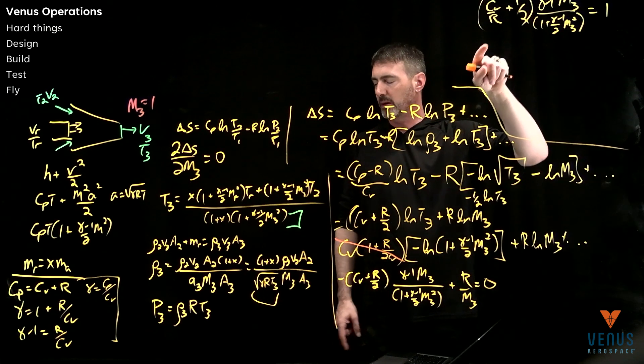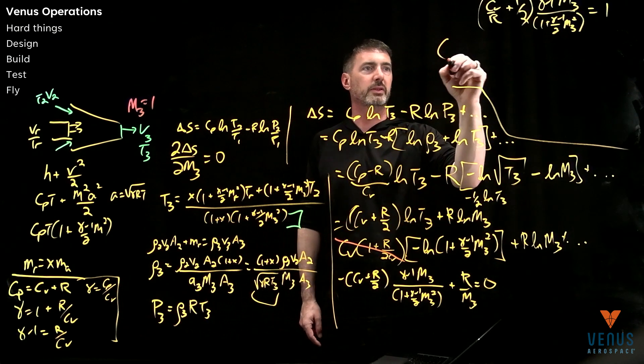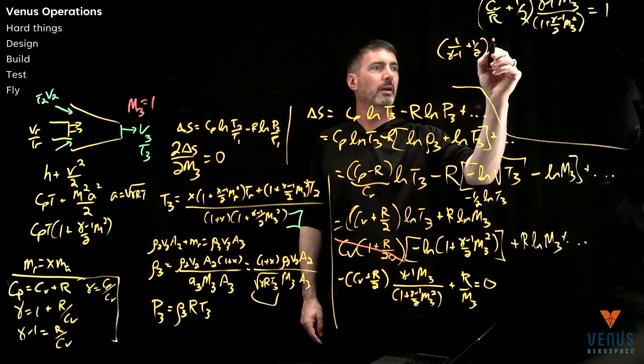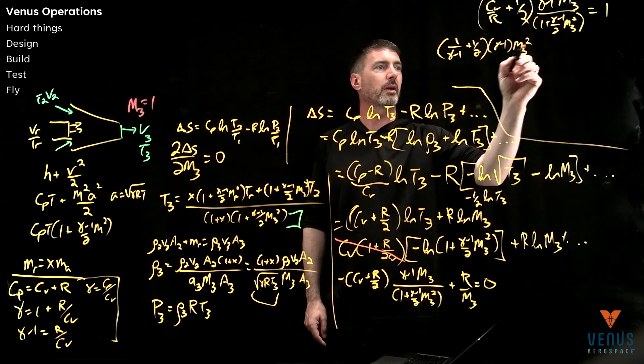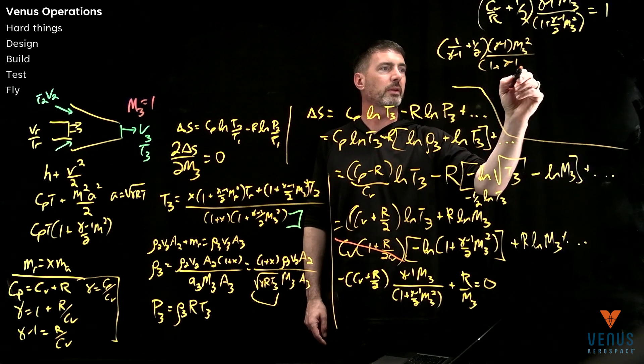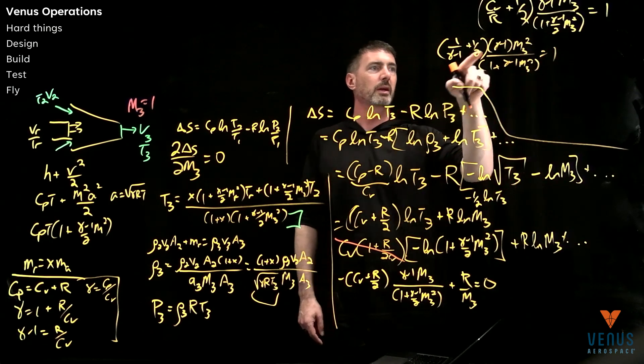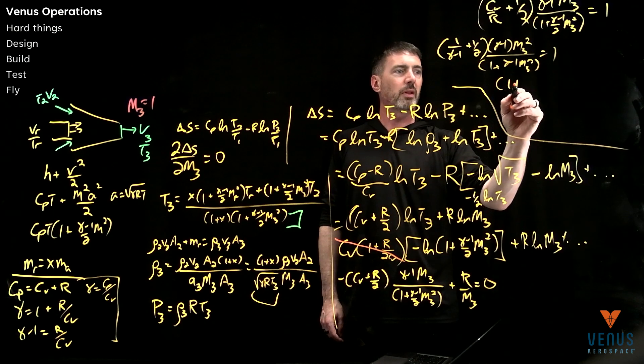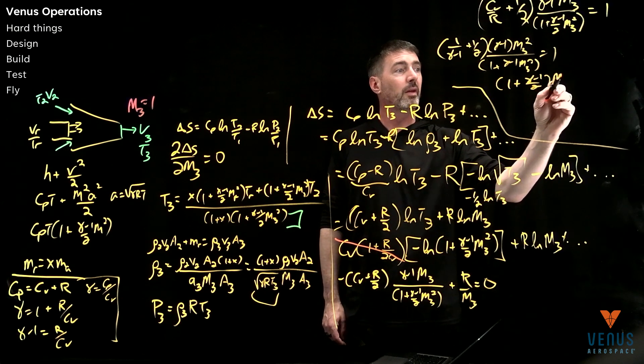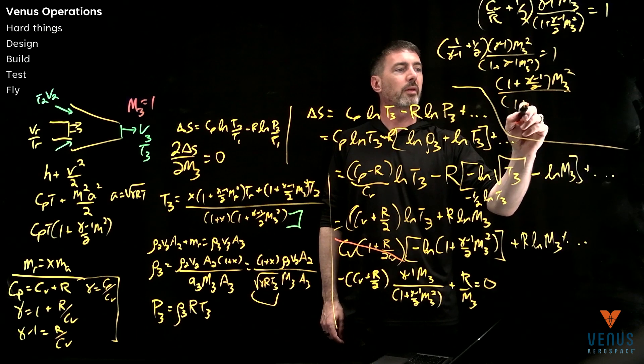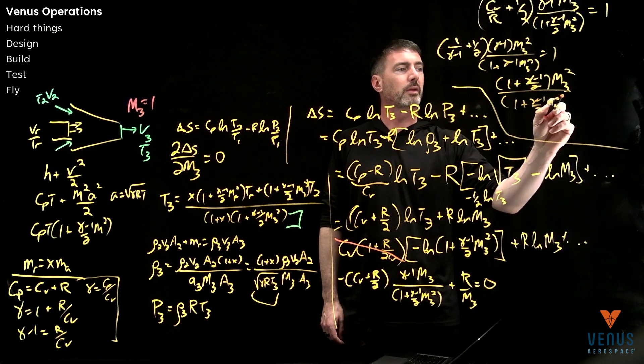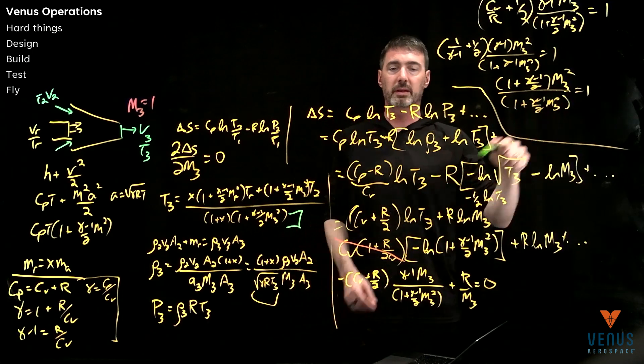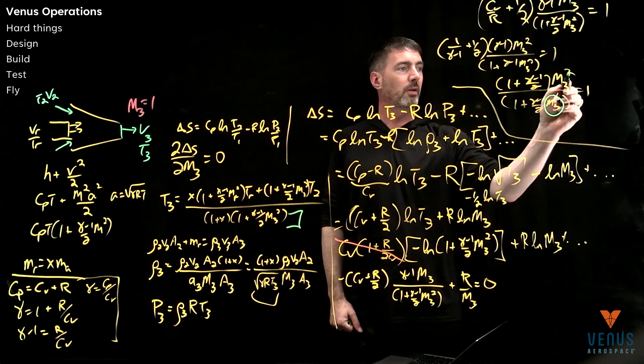So CV over R. I'm going over here. This is R with CV. So then it's actually then just 1 over gamma minus 1 plus a half. Gamma minus 1 Mach 3 squared over 1 plus gamma minus 1 Mach 3 squared equal to 1. This gamma minus 1 comes in and cancels out that one. And so in the end, you're going to have 1 plus gamma minus 1 over 2 parentheses Mach 3 squared over 1 plus gamma minus 1 over 2 Mach 3 squared is equal to 1. So we're now done because the only way this formula is equal to 1 is in the condition when Mach 3 is equal to 1.